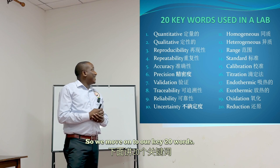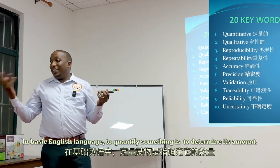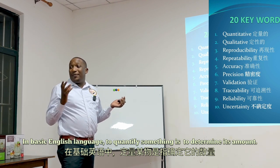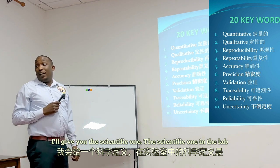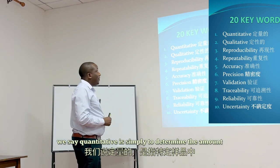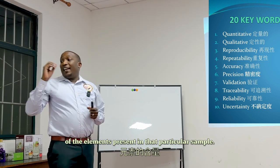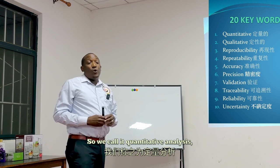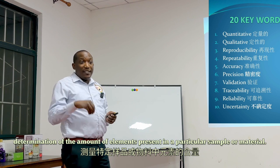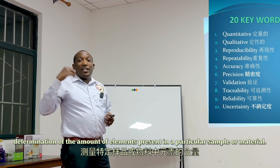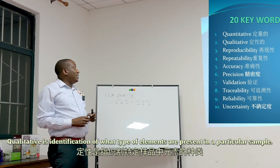We move on to our key 20 words. The first is quantitative. In basic English, to quantify something is to determine its amount. In the lab, quantitative simply means to determine the amount of elements present in a particular sample — quantitative analysis: determination of the amount of elements present. The second word is qualitative: identification of what type of elements are present in a particular sample.